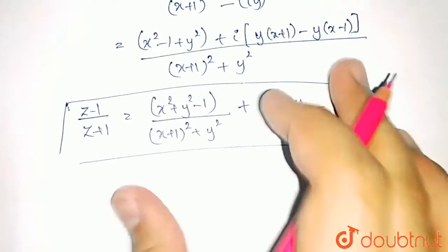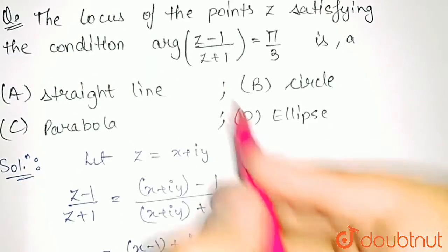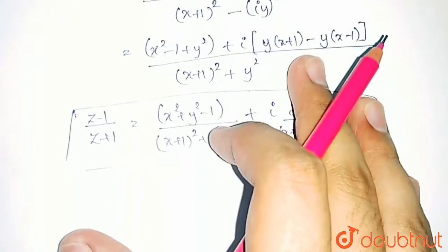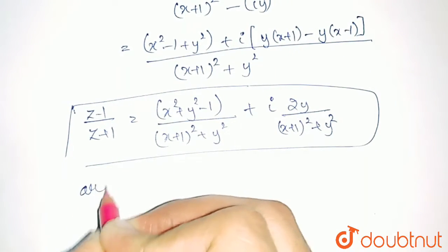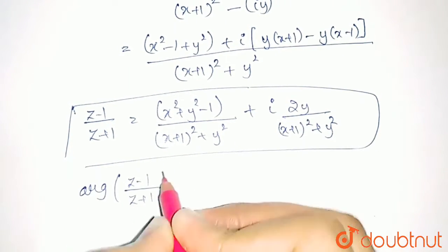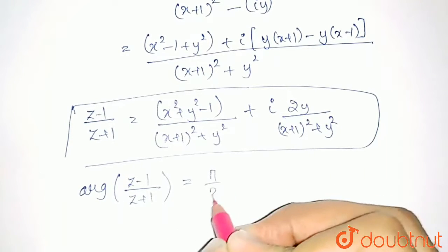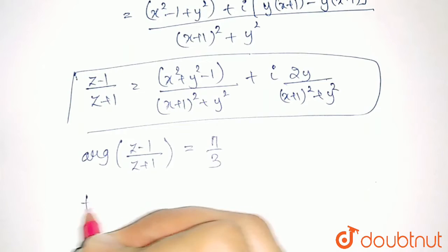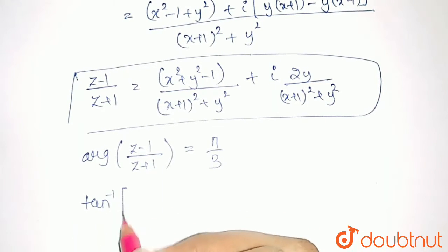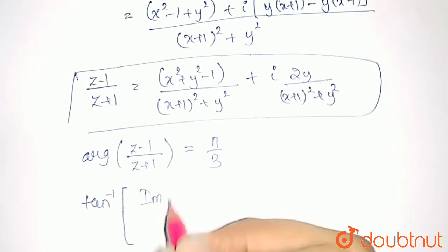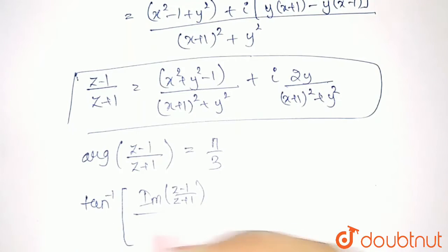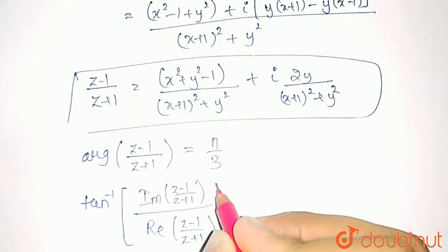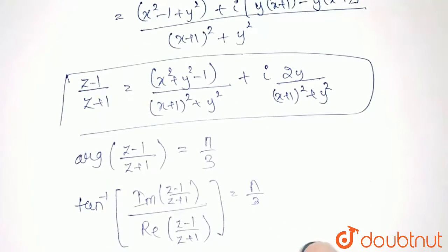Now, in the question it was given that the argument of z minus 1 upon z plus 1 is equal to pi by 3. The argument of z minus 1 upon z plus 1 would be tan inverse of the imaginary part of (z minus 1)/(z plus 1) divided by the real part of (z minus 1)/(z plus 1), and this is equal to pi by 3.